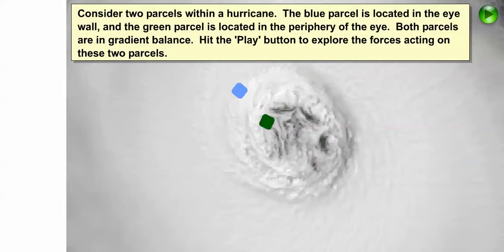To see one mechanism by which subsidence in the eye of a hurricane develops, let's examine two air parcels. The blue parcel is located in the eye wall, and the green parcel is located in the periphery of the eye.